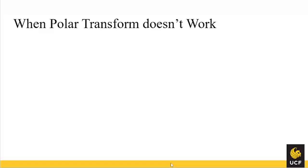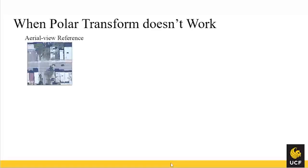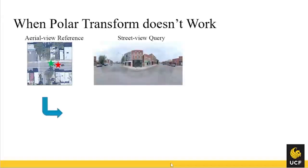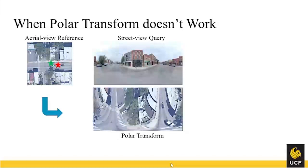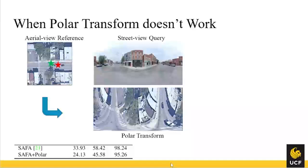But this is not always the case in real-world scenarios. When the polar transform doesn't work — for example, in a real-world urban area — we have an aerial view image with its center marked by a green star, but the query may not be at the center. The query can be anywhere on the street. If we do the polar transform, the layout is still very different from the ground truth query because the center does not match. If we use polar transform for localization in this scenario, performance drops a lot even on state-of-the-art methods.